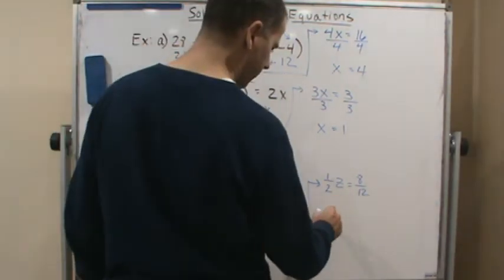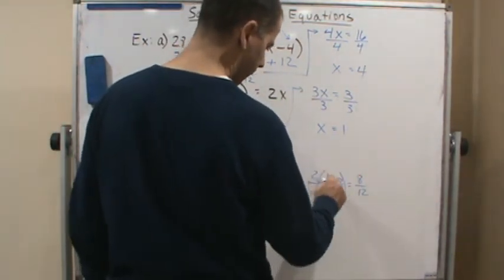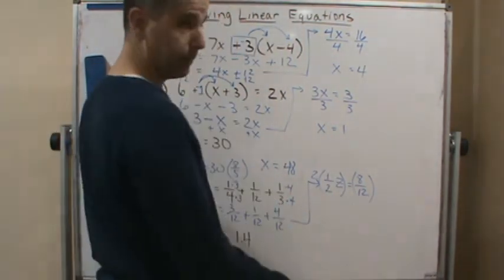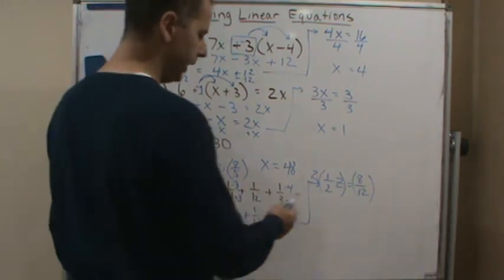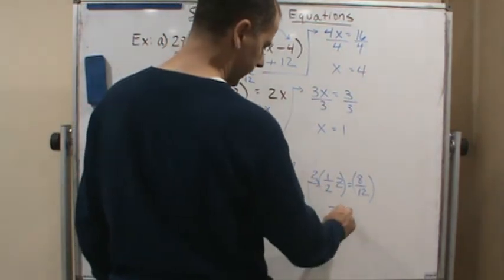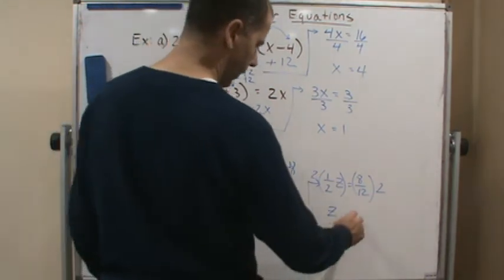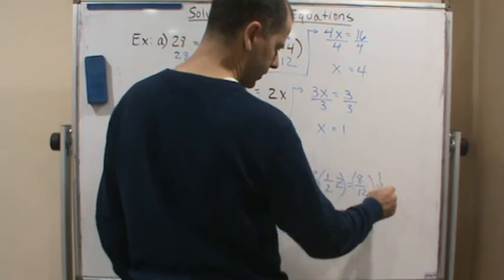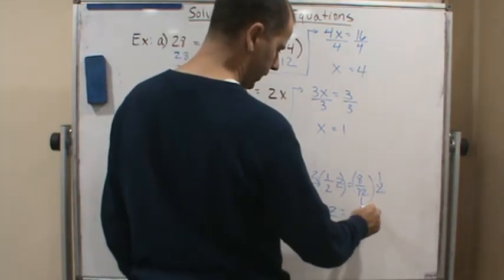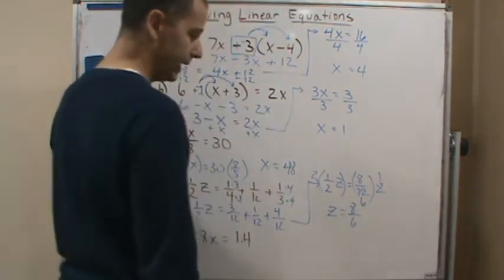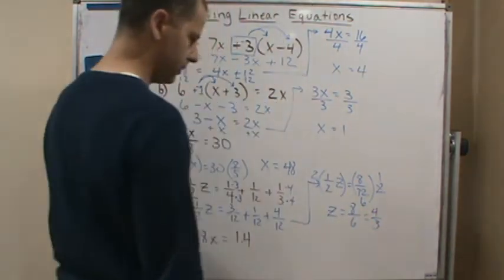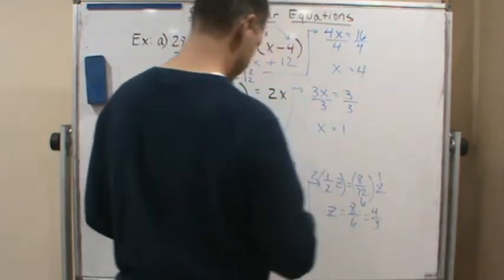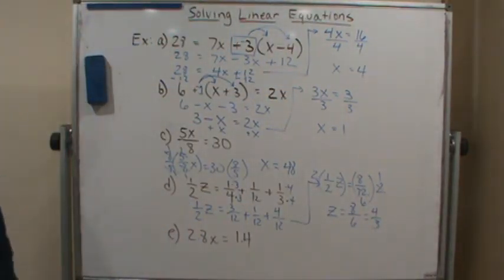Now I'll multiply both sides by 2 — the reciprocal of one-half — since when dealing with fractions I typically use multiplying by the reciprocal. Two times one-half is 1, so z equals 2 times 8/12. The 2 cancels with 12 to give 6, so I get 8/6, which reduces to 4/3 since 8 and 6 are both divisible by 2. So z equals 4/3, or one and a third.